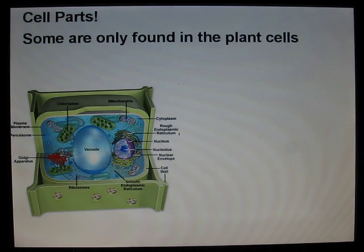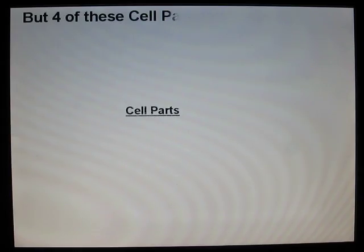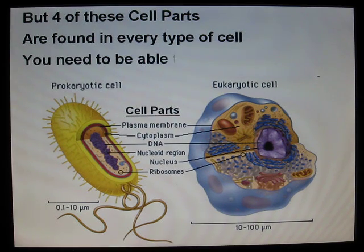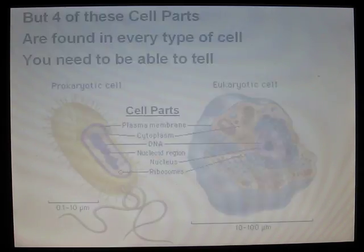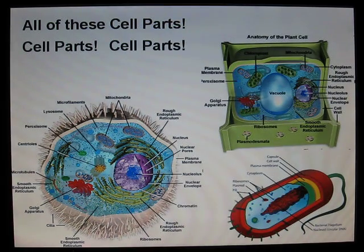Some are only found in the plant cell, some only in animal cells, but four of these cell parts are found in every type of cell. You need to be able to tell all of these cell parts. Cell parts, cell parts.